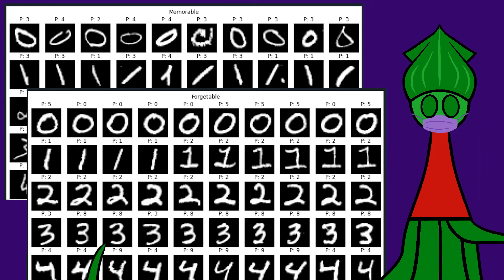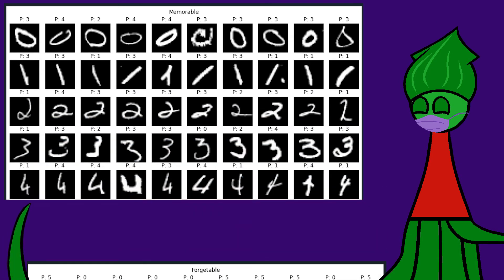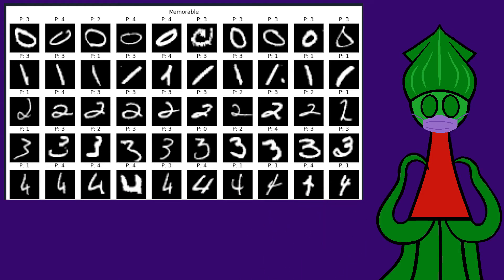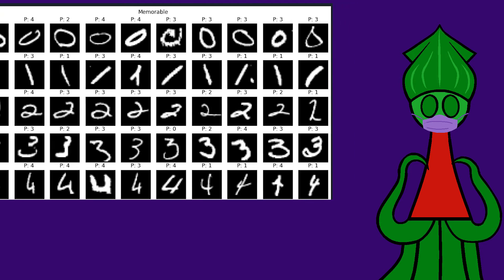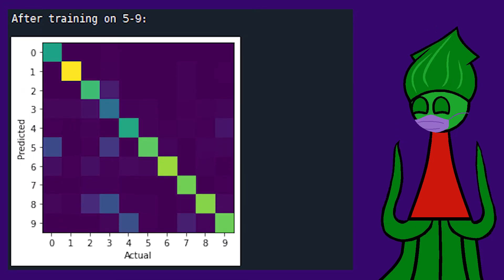These digits are forgettable because they're so generic. A dime a dozen. These digits are memorable because they look funky. If we regularize the classifier's output to the memorable digits when we train on 5 through 9, it remembers how to classify 0 through 4.